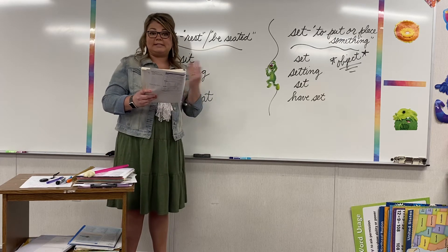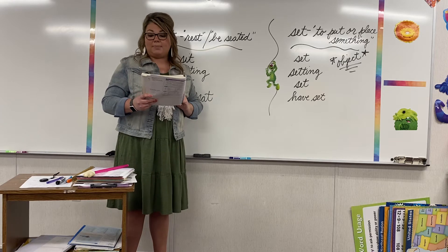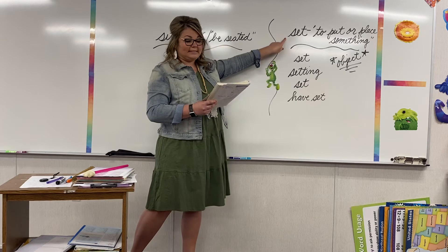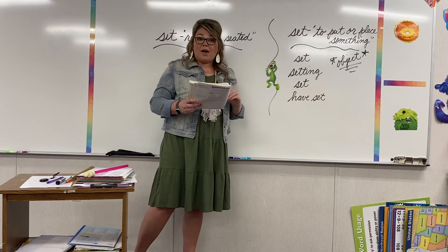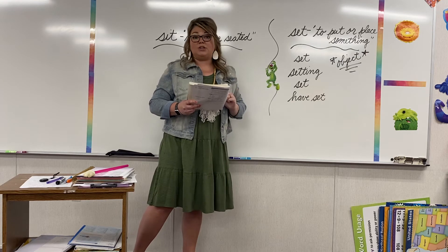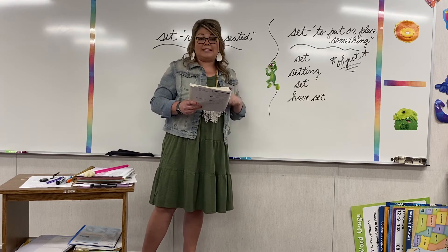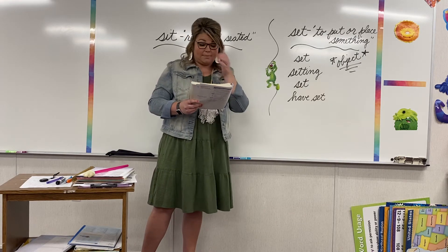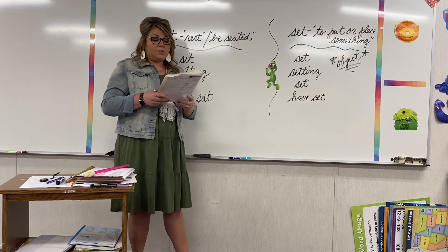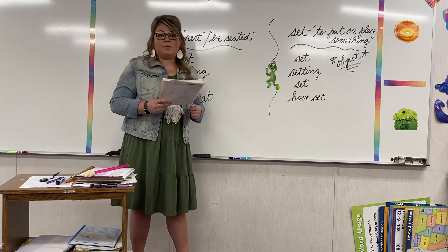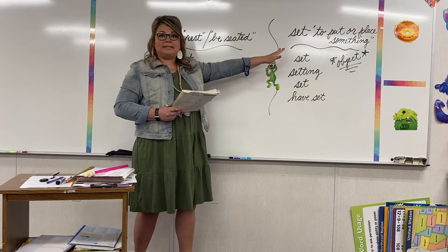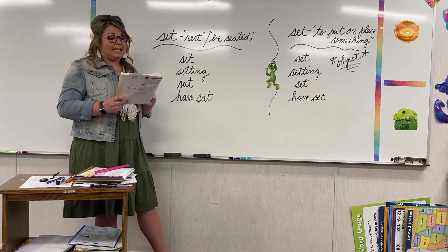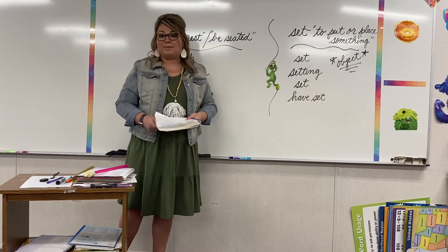Look at number three: would you please blank the box down over by the barrel? This is talking about to put or place something. You can see the object they are putting or placing, and you need to circle that object. You would say: would you please set the box — that's the object, so circle that — down over by the barrel. Number four: if you would blank here, you could see the performance better. Is it talking about to put or place something, or to be seated? If you're thinking to be seated, you would say sit — if you would sit here, you could see the performance better.